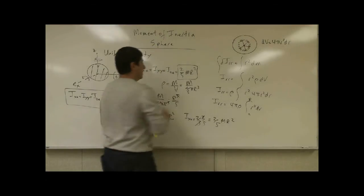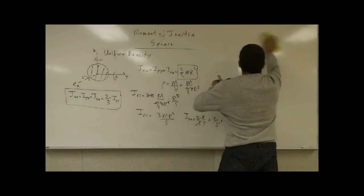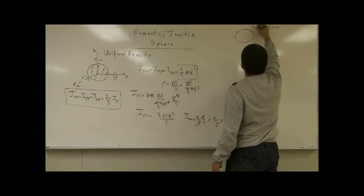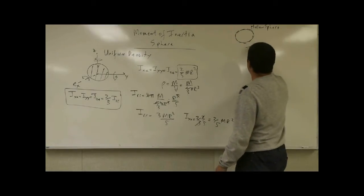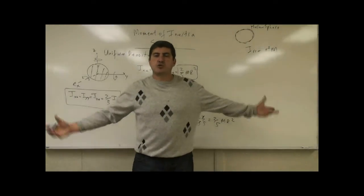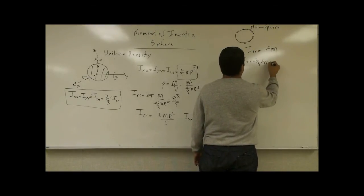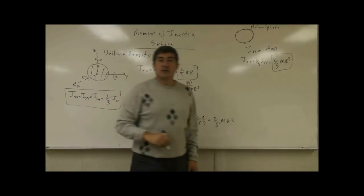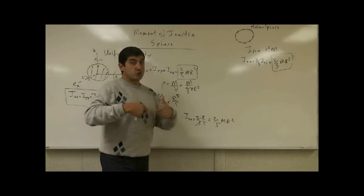That gives two-fifths m r squared for a solid sphere. What if the sphere is hollow — like a basketball or tennis ball with no material inside? If it's a hollow sphere, there's nothing inside, so the spherical shell is only on the outside. I_RR becomes R² M — all mass is concentrated on the outside, so no integration is needed. Then I_xx = (2/3) × M R² = two-thirds m r squared, which is the moment of inertia of a hollow sphere.